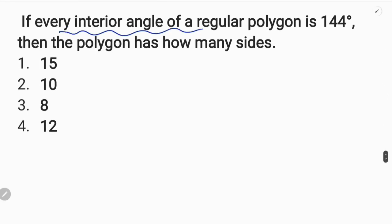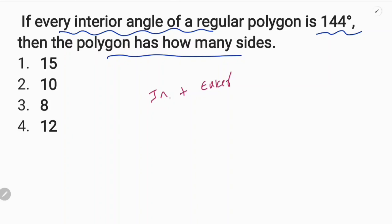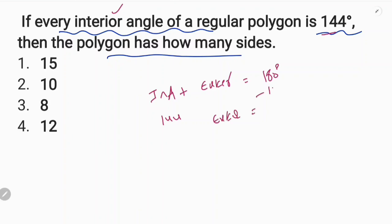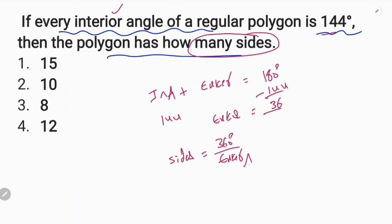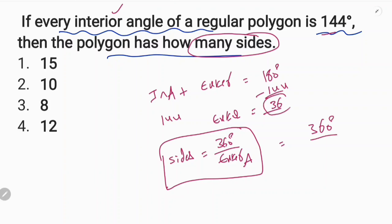If every interior angle of a regular polygon is 144 degrees, how many sides? I am going to tell you. The exterior angle is 36 degrees. I will calculate the number of sides. Sides is equal to 360 degrees by exterior angle. 360 degrees divided by exterior angle 36 equals 10 sides.